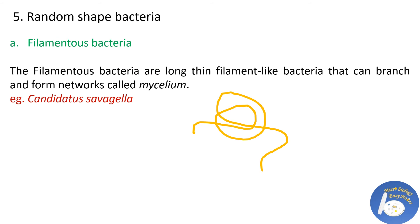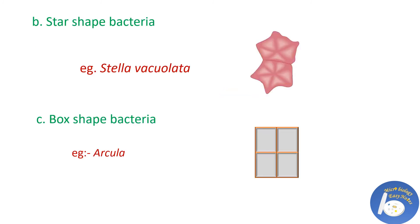The next shape is random-shaped bacteria — these bacteria do not have a particular structure and have many subcategories. The first is filamentous bacteria, which have long thread or filament-like structures. An example is Candidatus Savagella bacteria, a member of the gut microbiota of rodents, fish, and chickens. Next is star-shaped bacteria — an unusual shape that resembles a flat six-pronged star. An example is Stella vacuolata, found in soil, horse manure, and aquatic habitats with salinity.